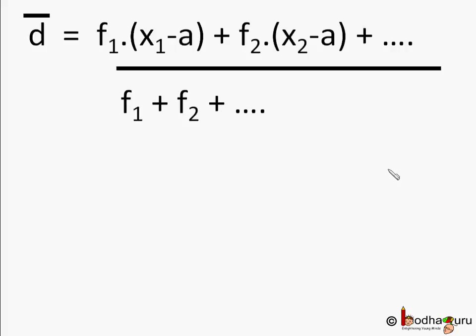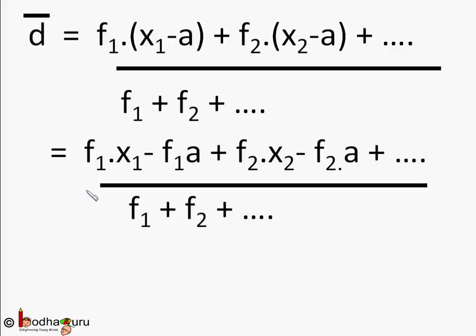Let us open the sigma sign. Sigma is nothing but summation. So d bar equal to f1 into x1 minus A plus f2 into x2 minus A plus f3 into x3 minus A and so on, divided by f1 plus f2 plus f3 and so on. Now let us open the bracket in the numerator.